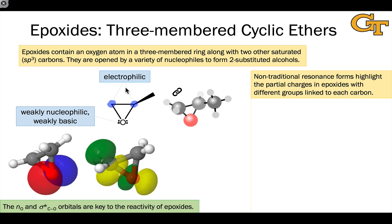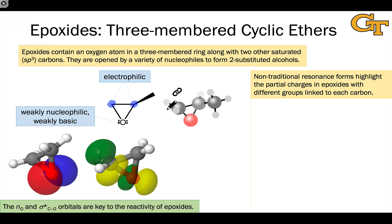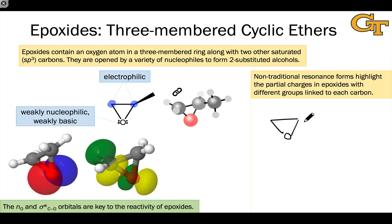Going back to the original drawing of the epoxide, one thing you may wonder is: if both carbons of the epoxide are electrophilic, how do we know which one reacts when an epoxide is treated with a nucleophile? This is a great question — it gets at the site selectivity of epoxide opening reactions, which we'll discuss in detail here in a second.